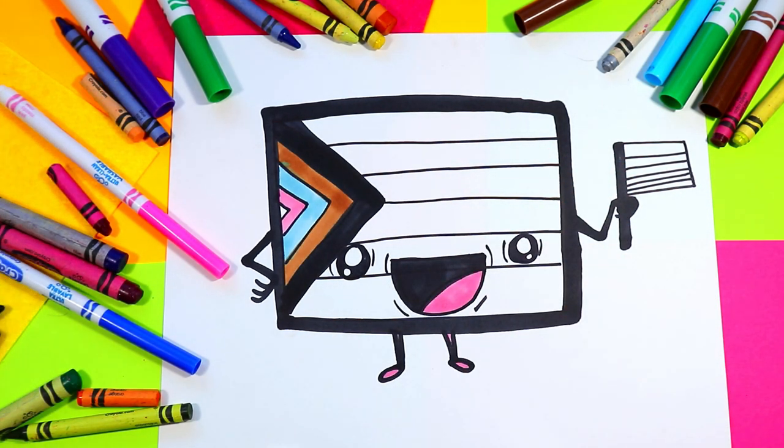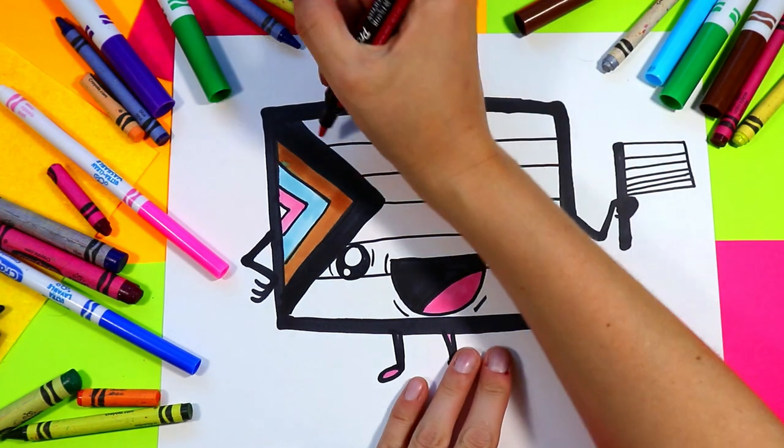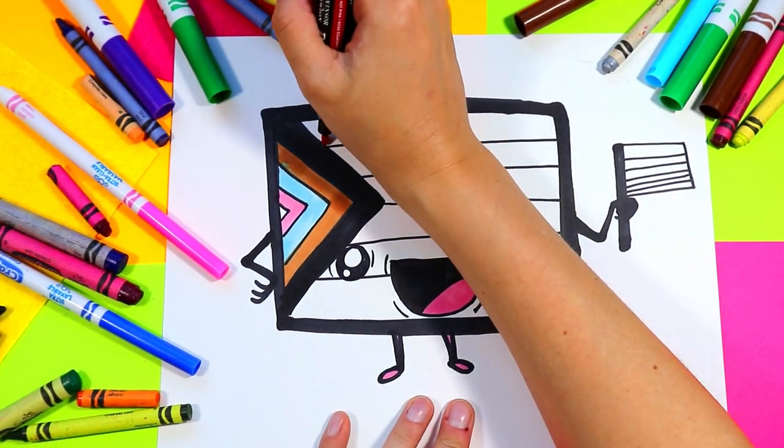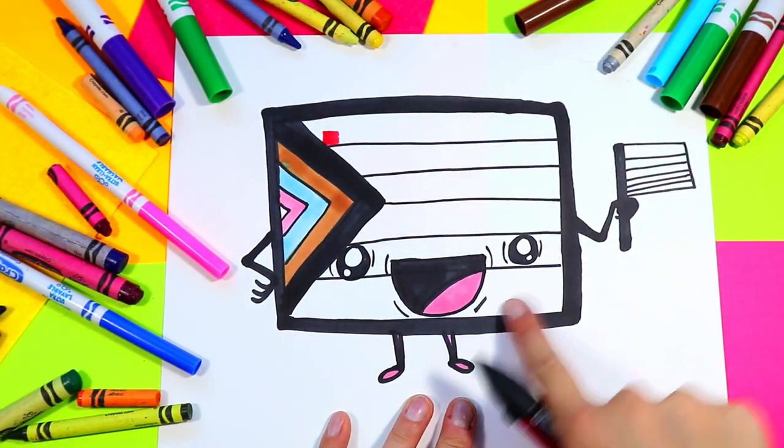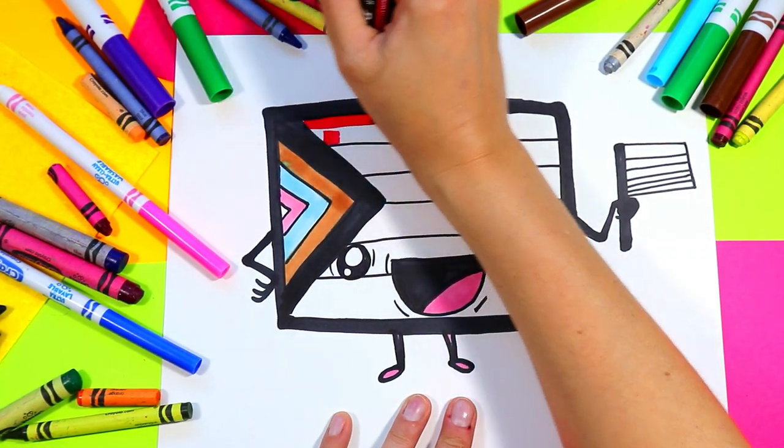Alright, next we're gonna grab our red and we're gonna start off the rainbow here. So our first color is going to be red. And we're gonna use it across. We're gonna do the same colors here and here. Okay? So red.